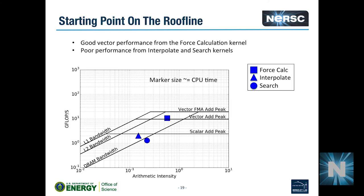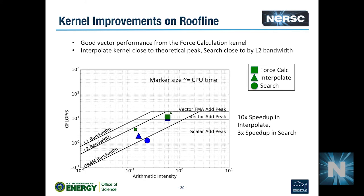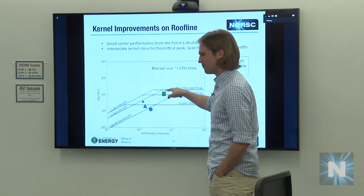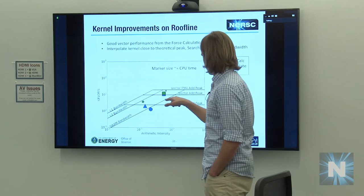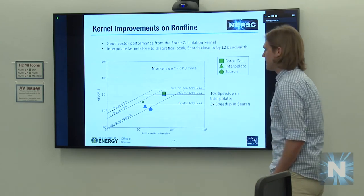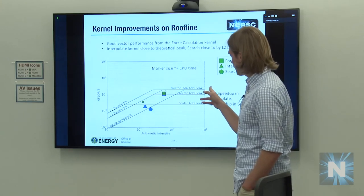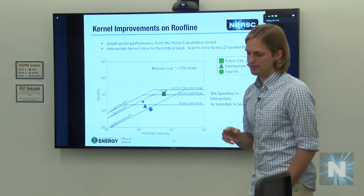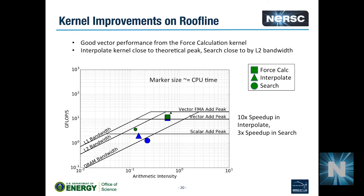Looking at the updated roofline: after optimizations to the search and interpolation, both move up significantly. The interpolation is roughly 10 times smaller in runtime and performing very close to the maximum possible. The search went up about 3x; it loses some arithmetic intensity because vector loads are now bringing in some extra data from memory due to alignment, but we're still seeing a speedup overall.